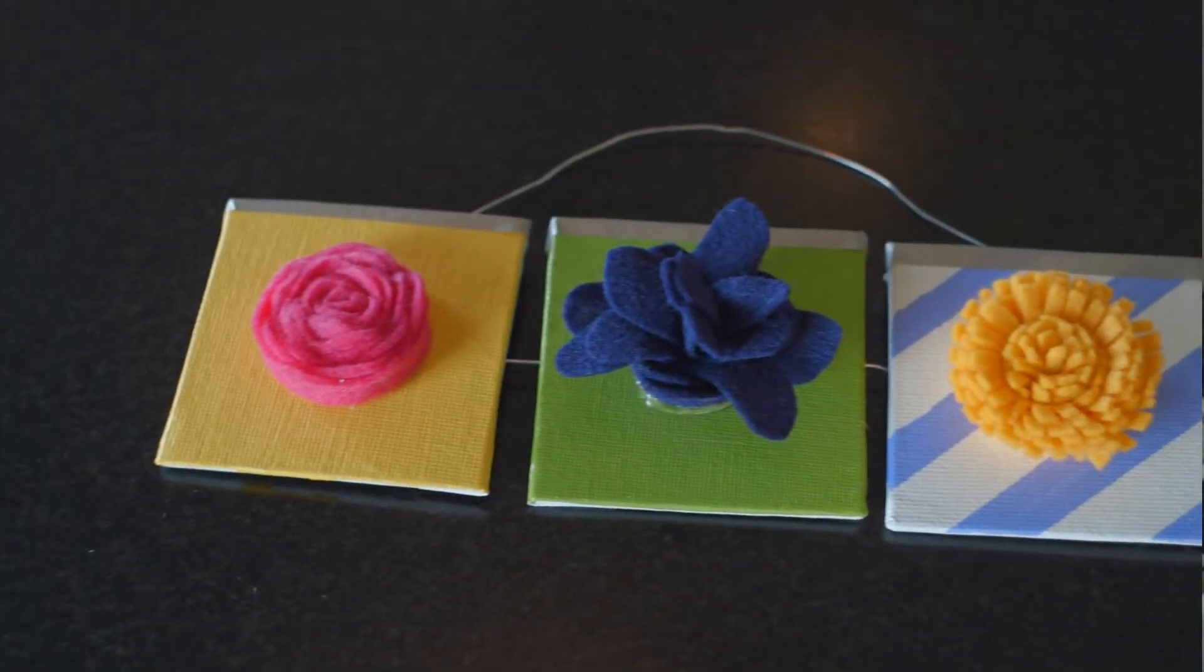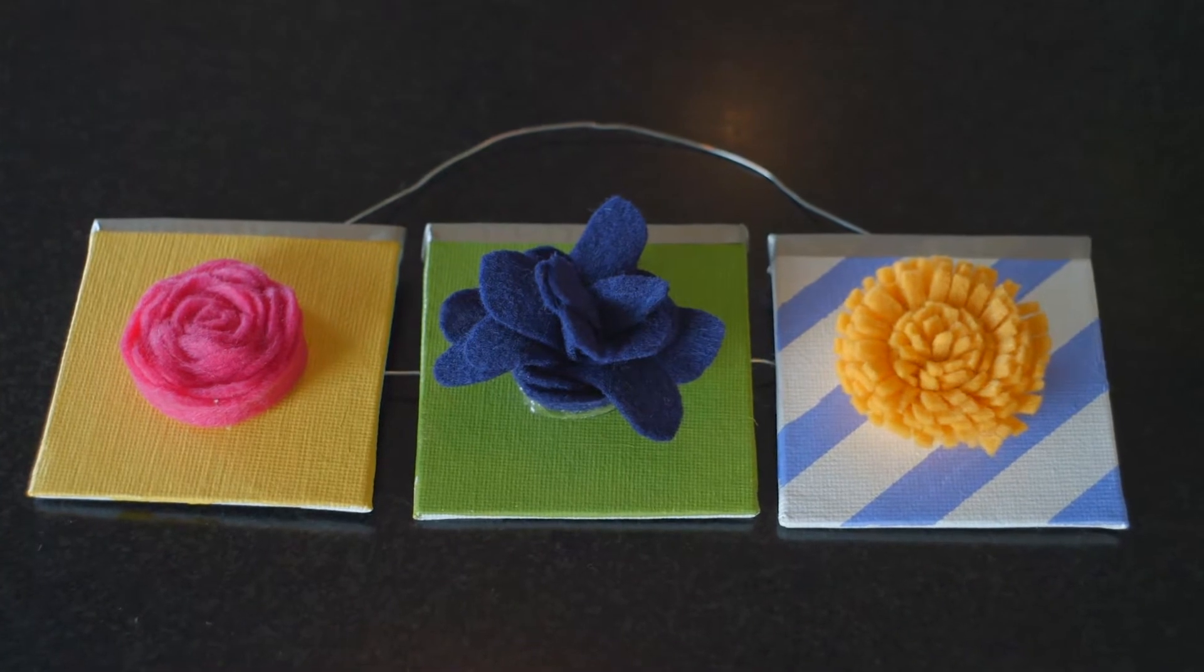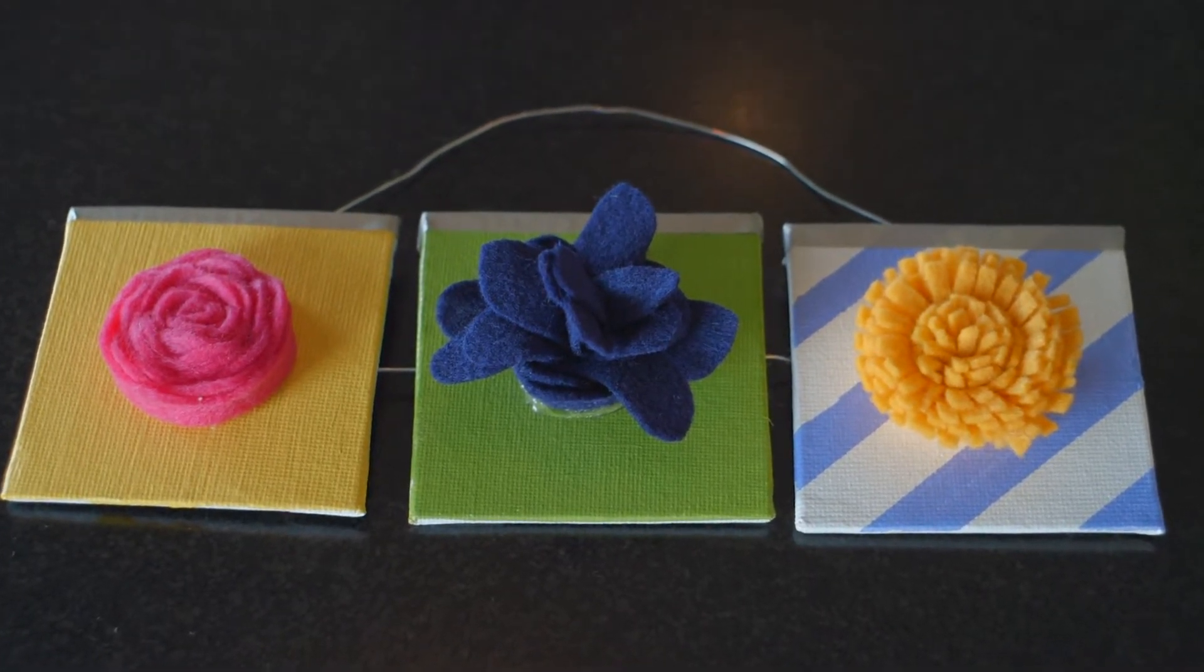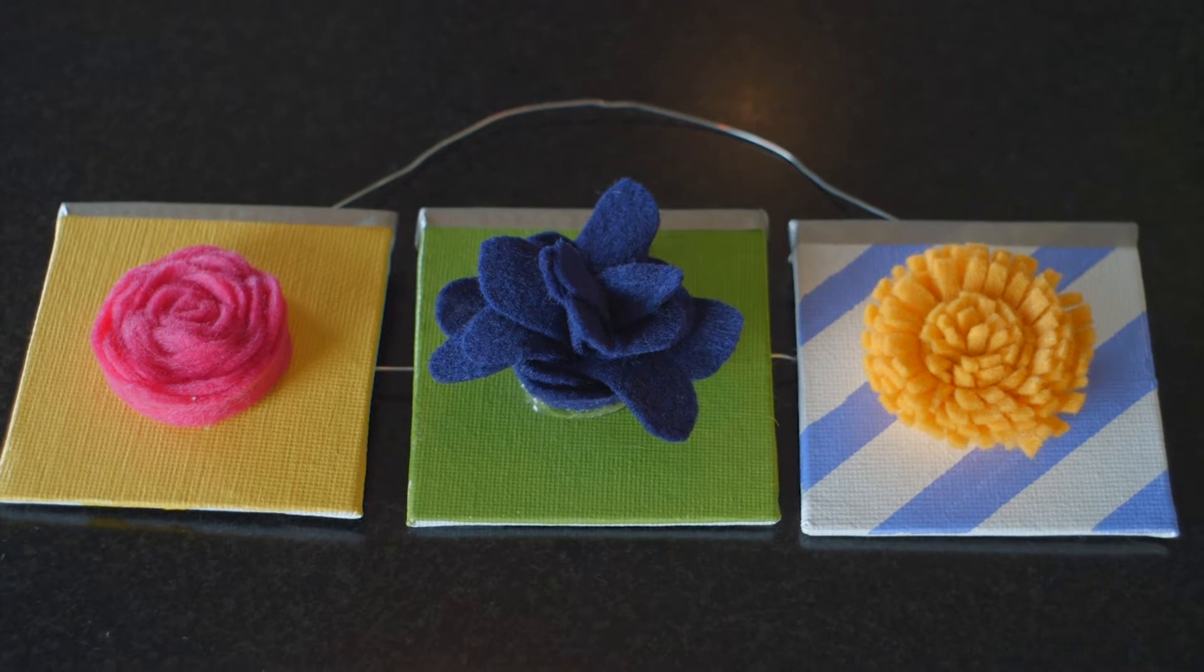So first, let's start. I have here three different types of flowers that I made. A rose, this like other daisy-ish looking one, and then this one here. And they're all really, really easy. They only need to do different types of cuts with the felt. So let's do the first one. Let's do the rose first.